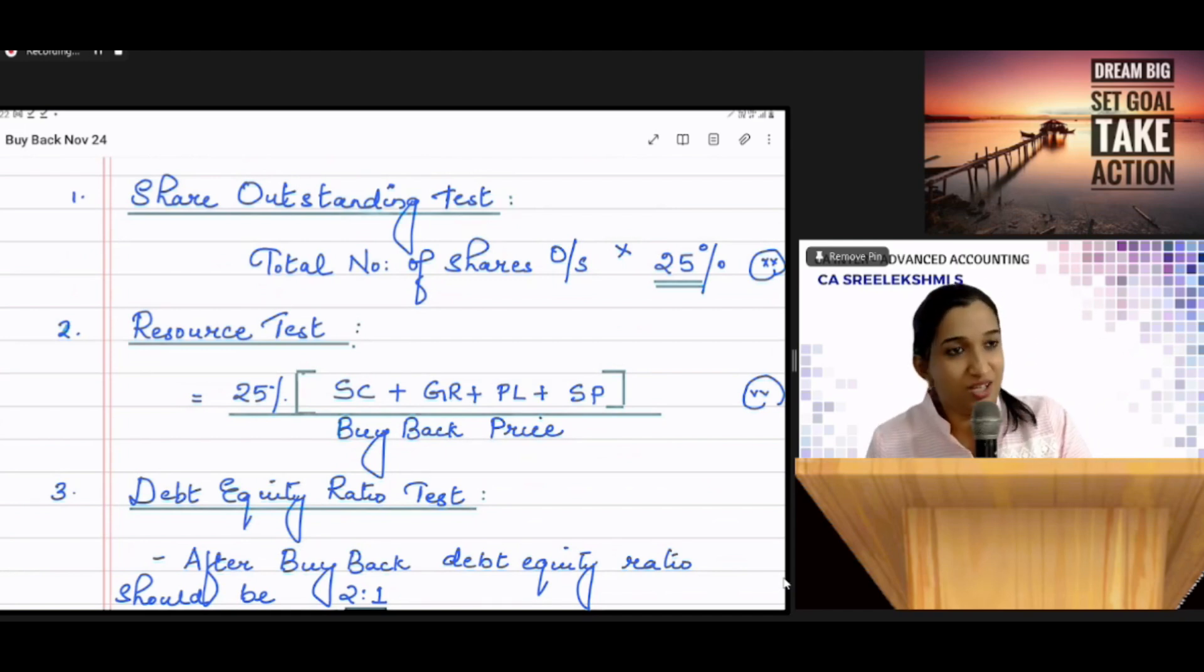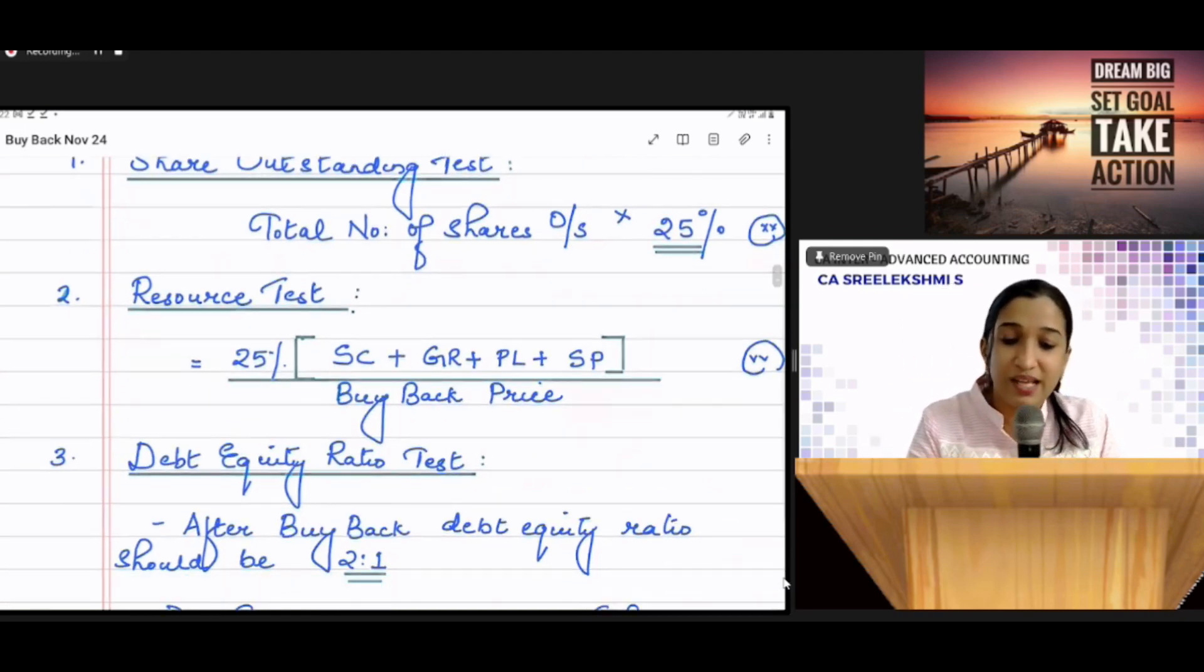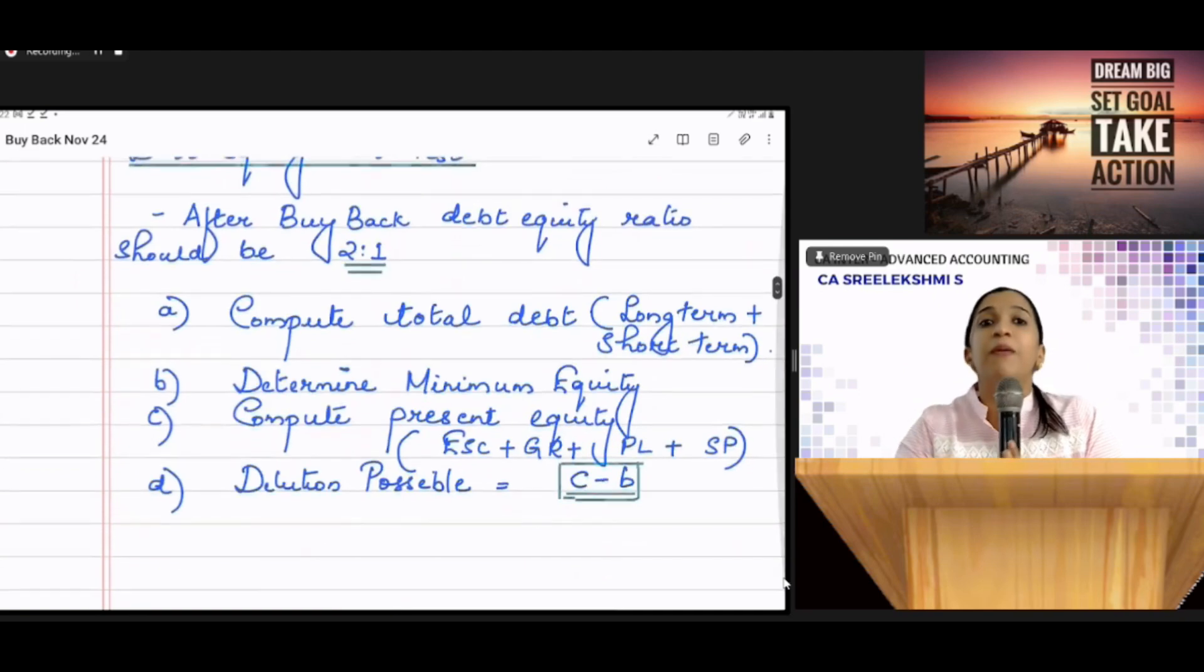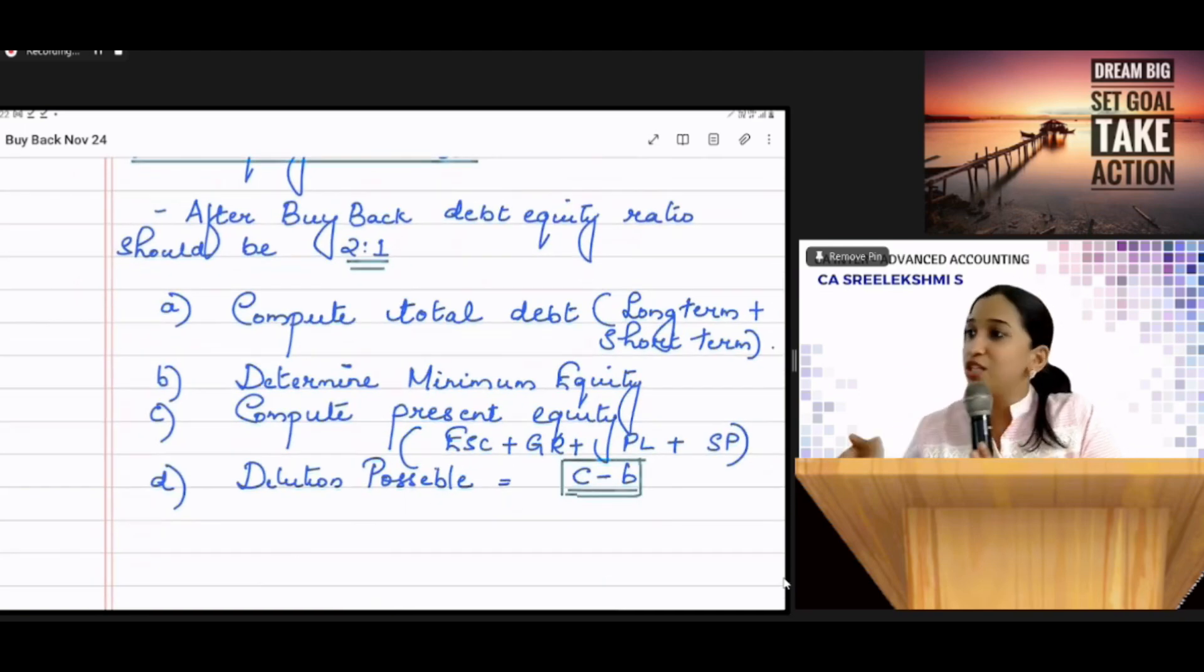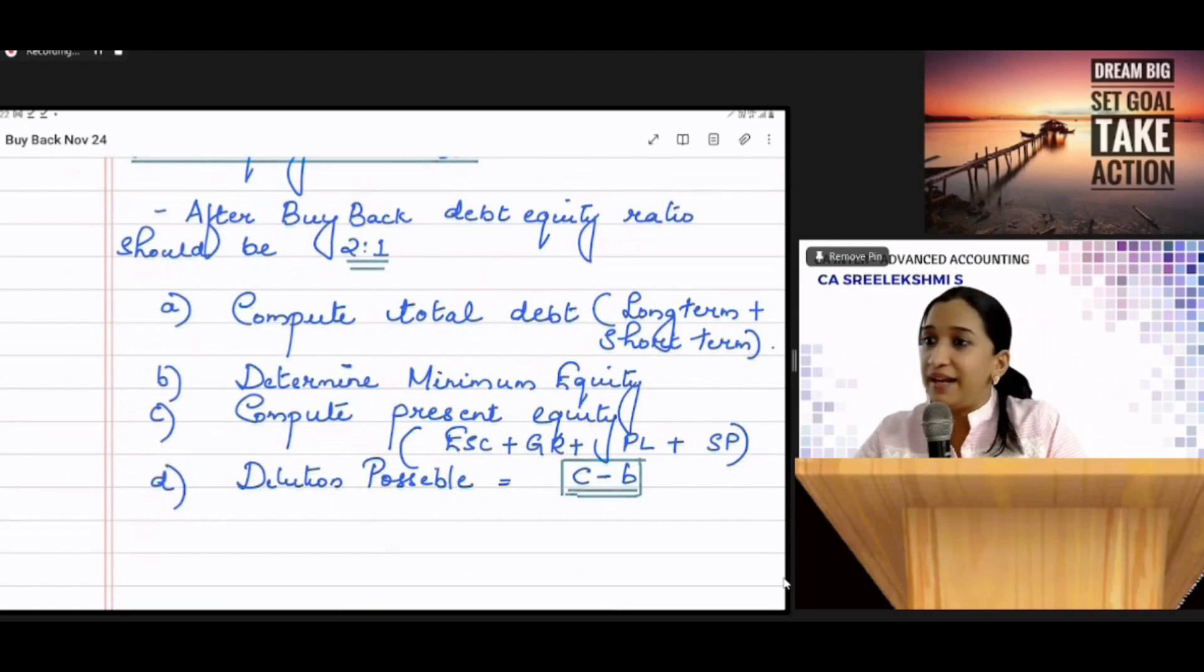Then debt-equity ratio test. The concept is after buyback, debt-equity ratio should be 2 is to 1. So, for that, what are the steps we will do? Compute total debt. Then, what is the minimum equity? Just half.